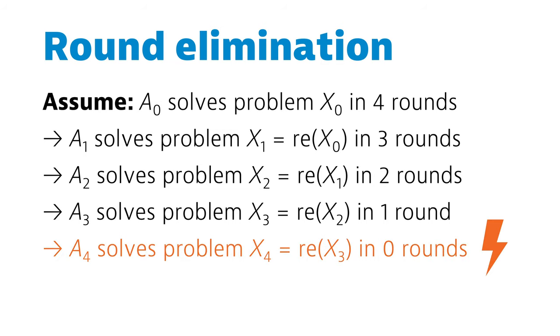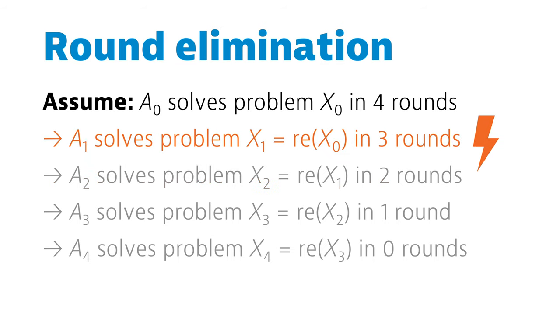And now it is enough to show that X4 cannot be solved in 0 rounds. If we can show that all possible 0 round algorithms for X4 fail, then we have a contradiction. Therefore X3 can't be solved in 1 round. X2 can't be solved in 2 rounds. X1 can't be solved in 3 rounds. And X0 can't be solved in 4 rounds.